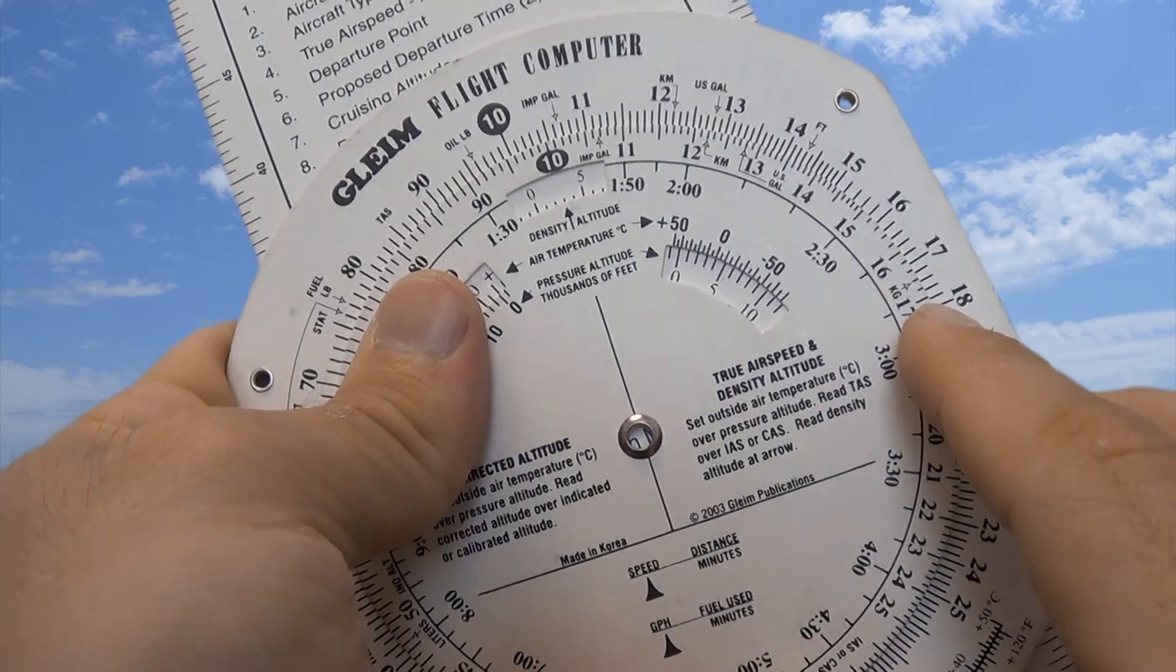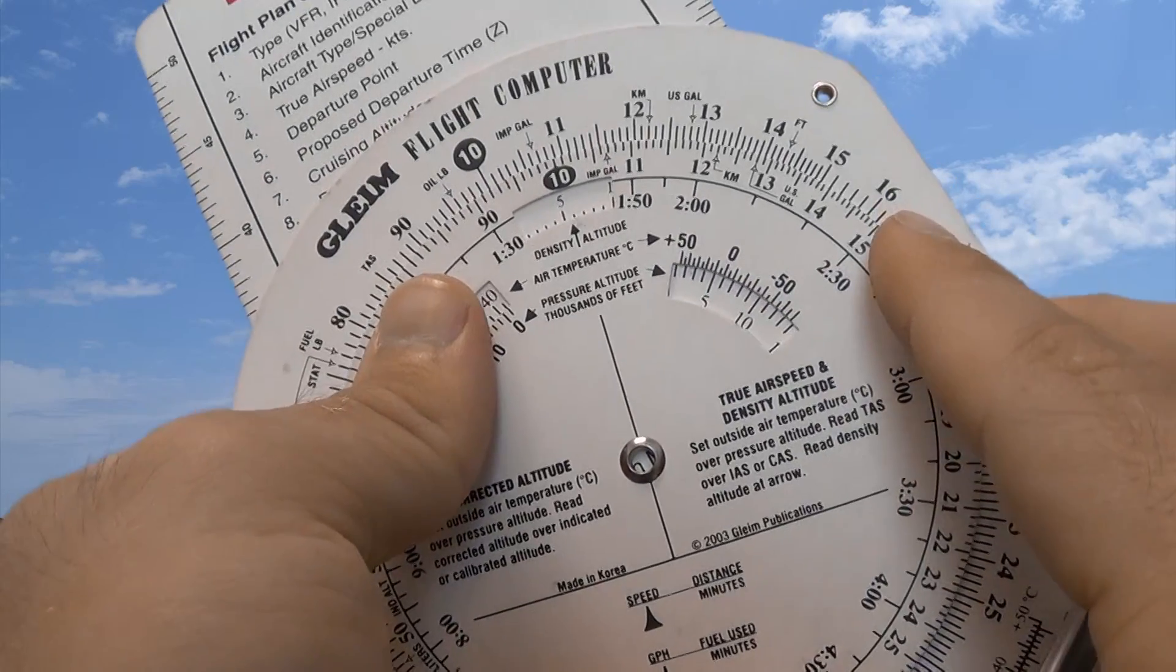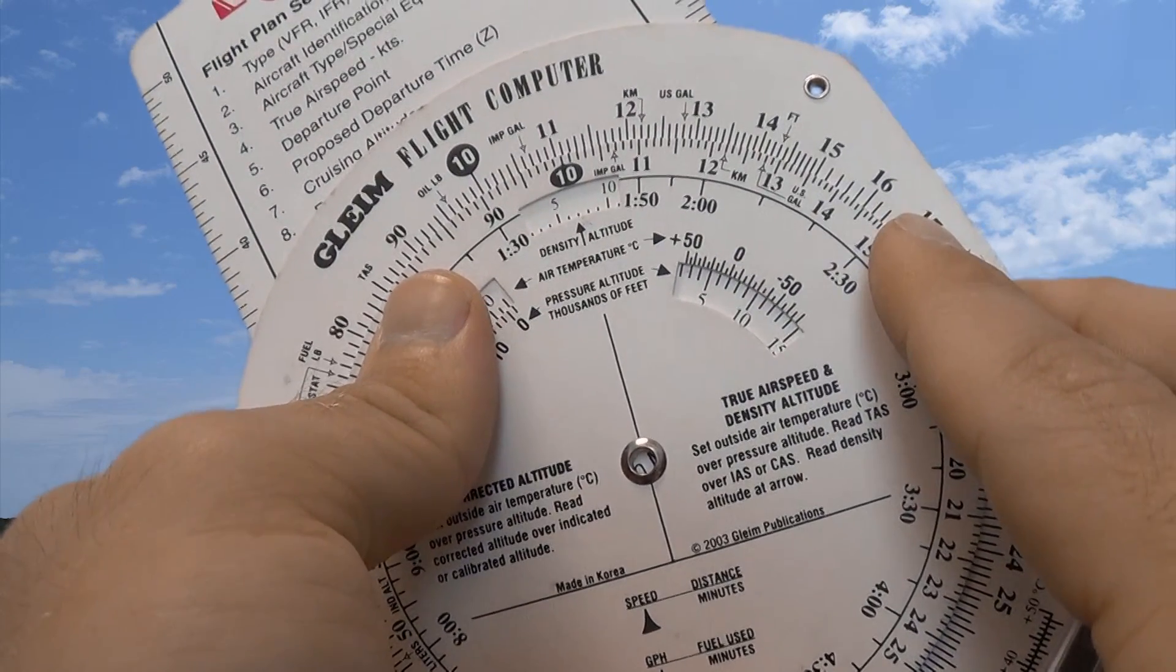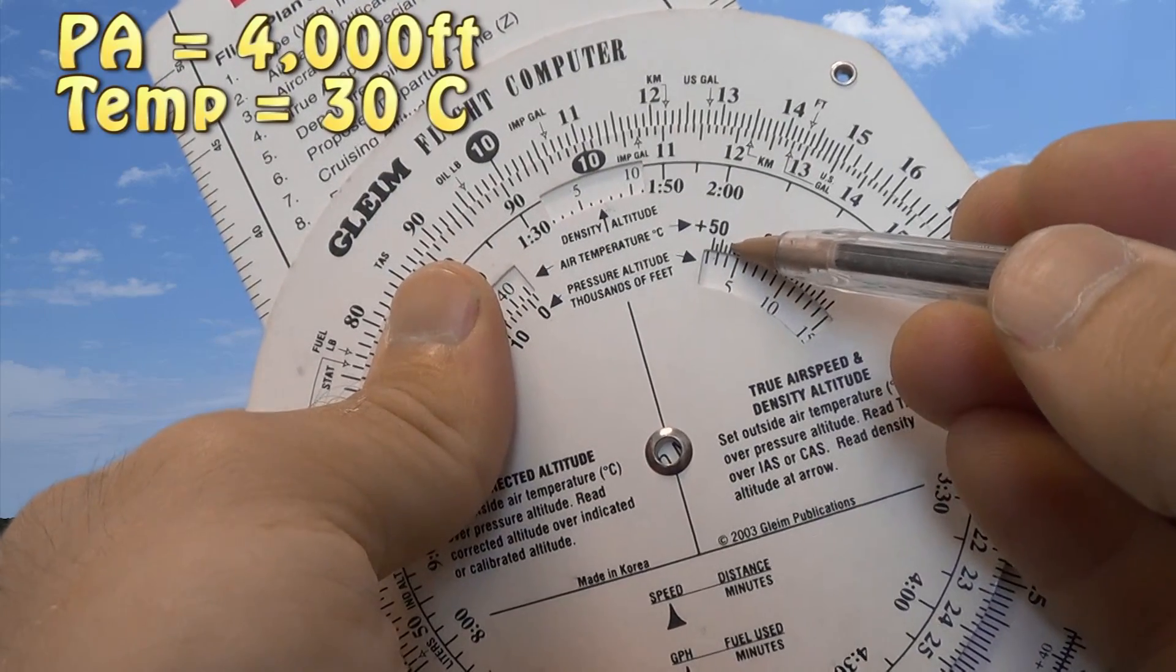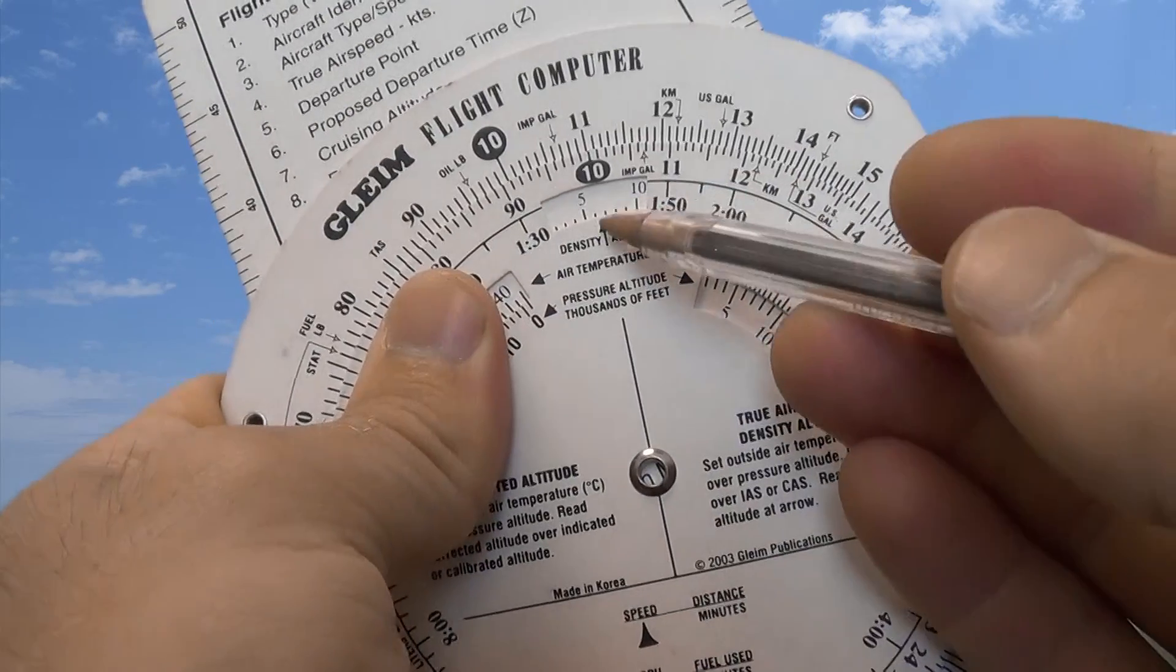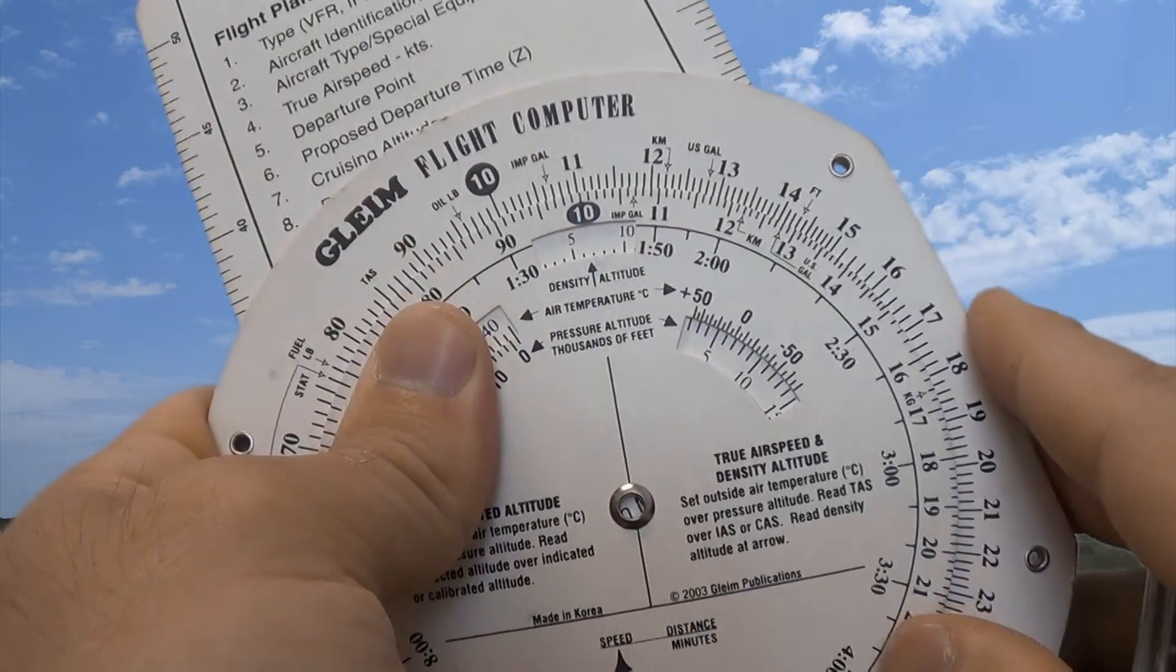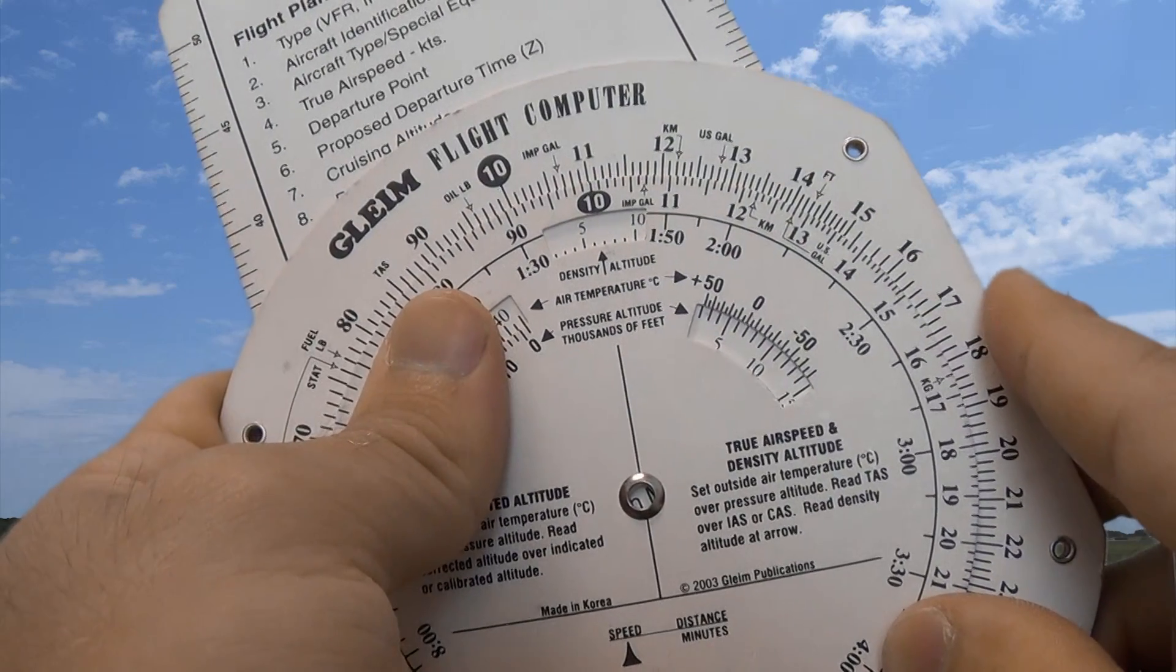If we go ahead and say we set 4,000 feet for our pressure altitude and 30 degrees Celsius on a slightly warmer day, we would go to 4,000 foot pressure altitude and 30 degrees Celsius, line up those two lines there, and then read we have about a 6,500 foot density altitude. So the density is even higher with a higher temperature and higher pressure altitude.